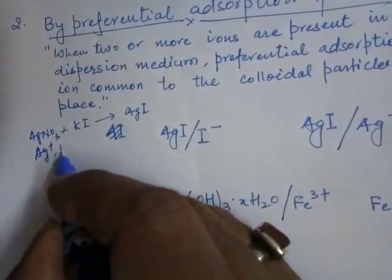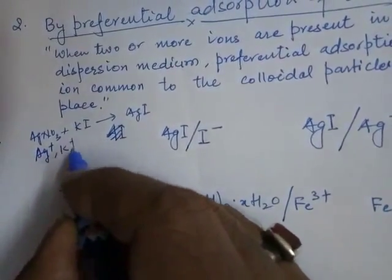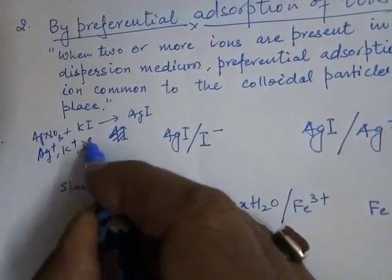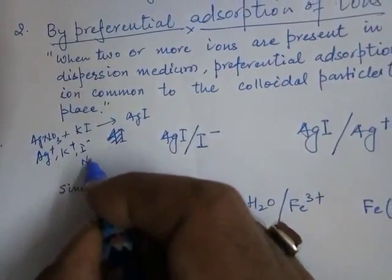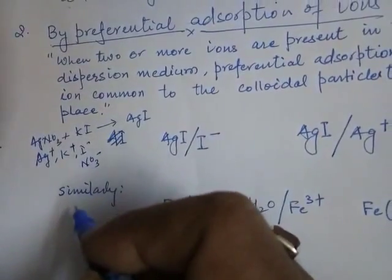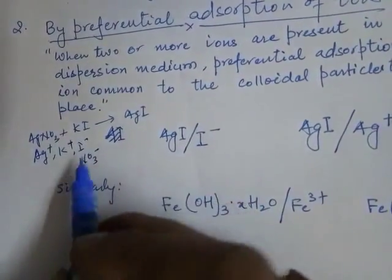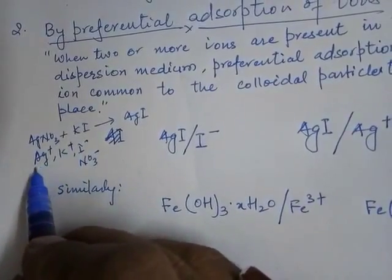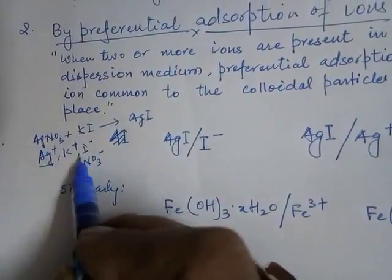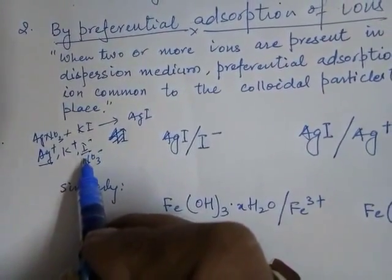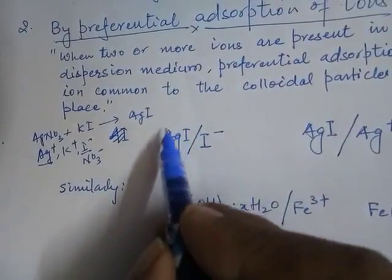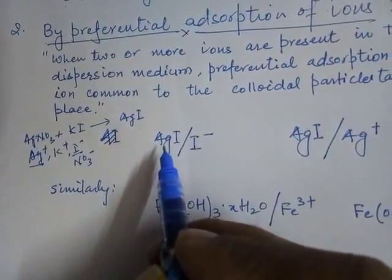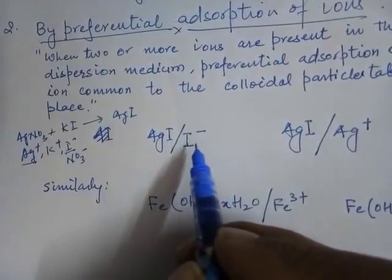Out of these four ions — Ag⁺, K⁺, I⁻, and NO₃⁻ — only Ag⁺ and I⁻ are common to the silver iodide sol particle. That is why either Ag⁺ or I⁻ is preferentially adsorbed.